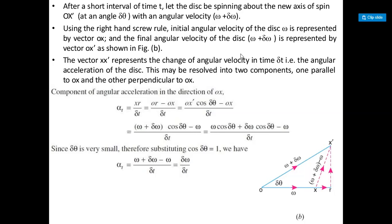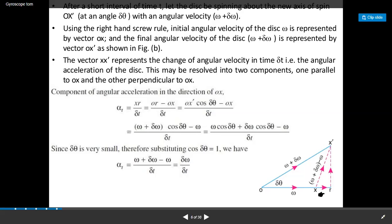The vector XX-dash represents the change in angular velocity in time delta t, giving the angular acceleration of the disc. This may be resolved into two components: one parallel to OX-dash and one perpendicular to OX-dash. The component of angular acceleration in the direction of OX-dash, alpha_t, equals (OX-dash × cos(delta theta) minus OX) divided by delta t, which gives omega plus delta omega into cos(delta theta) minus omega.